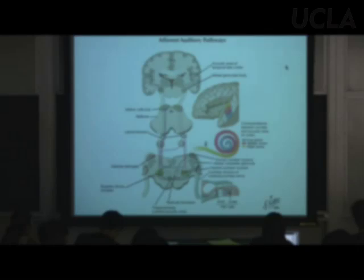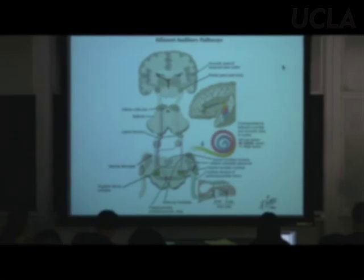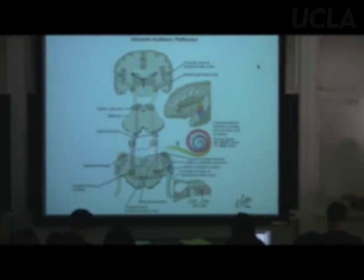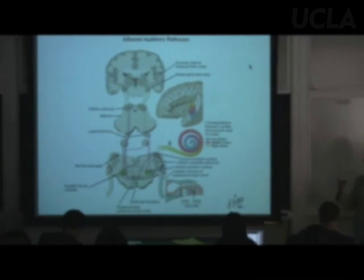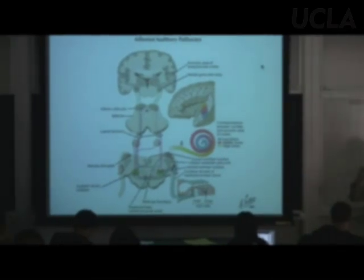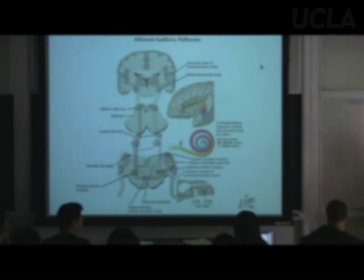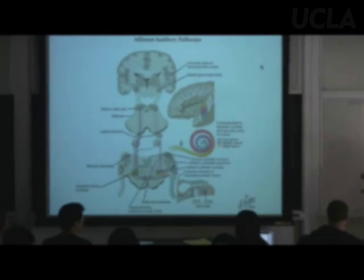These neurons are really good at temporal differences — if you have two clicks, one here and one there, neurons in the superior olive will code for which one came first. They're also good at picking up phase differences as the sound wave hits one ear slightly differently than the other. We're pretty sure the superior olive is involved in sound localization.